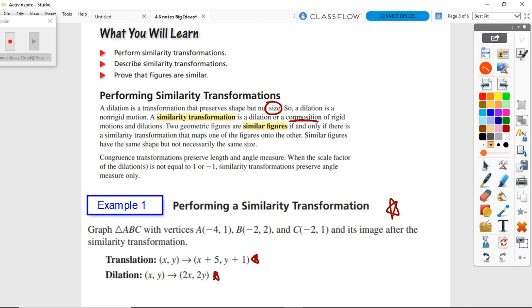You can use GeoGebra for it like we just did, or you can just do it by hand. A prime: I'm going to add five to the x's, I'm going to add one to the y's. B prime: add five to the x's, add one to the y's. C prime: add five to the x's and add one to the y's.